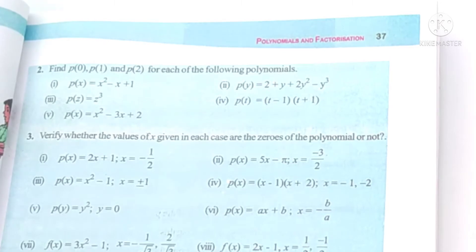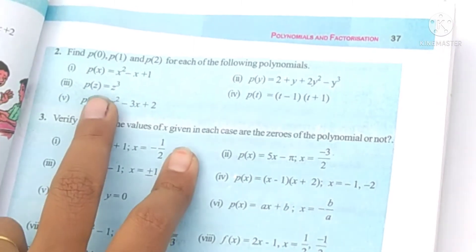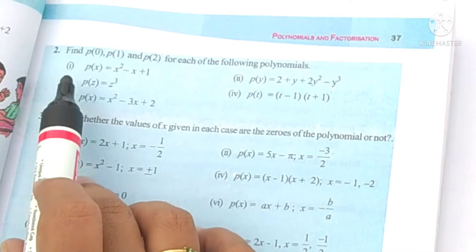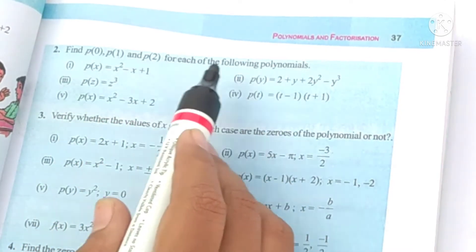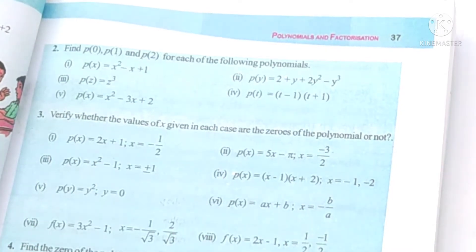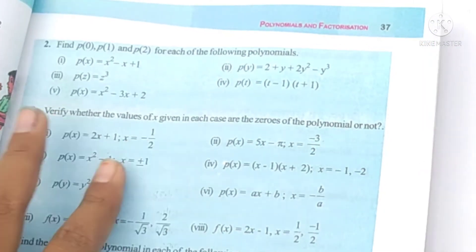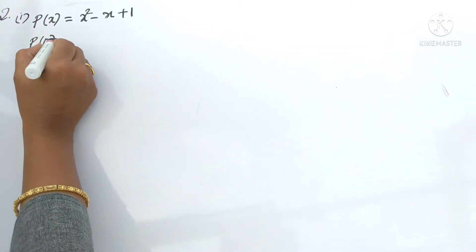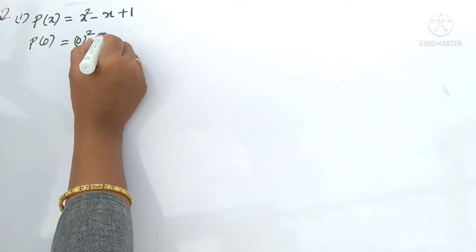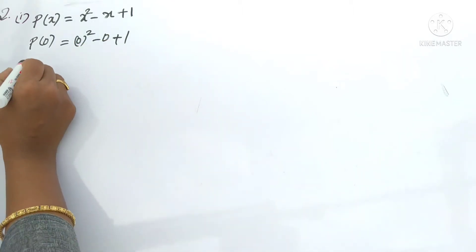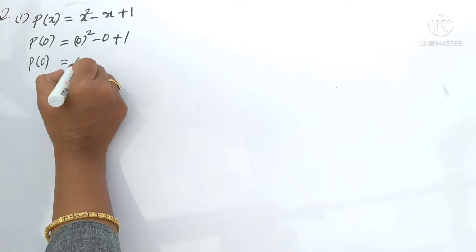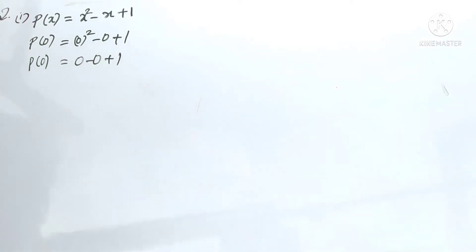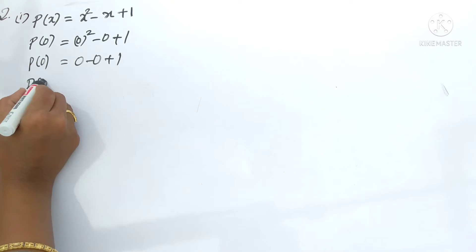Hello students, welcome to my channel. In this video we are going to see our second problem in Exercise 2.3 - find p of 0, p of 1, and p of 2 for each of the following polynomials. Five polynomials were given, so in each case we have to find p of 0, p of 1, and p of 2. First, we will calculate p of 0 - just substitute 0 in the place of x. So p of 0 is equal to 0 minus 0 plus 1.